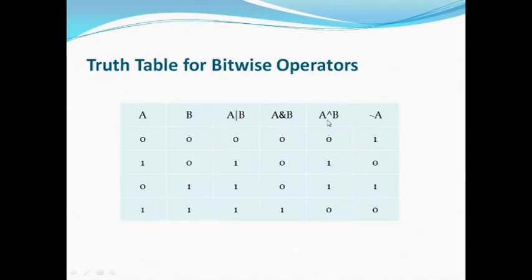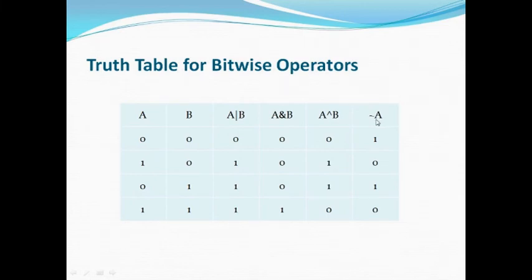For bitwise exclusive OR, if both a and b are true the value will be false; it is true only if either a or b is true (but not both). Next comes bitwise NOT: if a is 0, bitwise NOT of a will be 1; if a is 1, bitwise NOT of a will be 0.